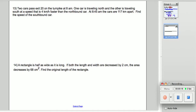Number 13, two cars pass exit 20 on the turnpike at 8 a.m. One is going north, the other one is going south at a speed that's 4 kilometers per hour faster than the northbound one. At 8:45, which is three quarters of an hour past 8 o'clock, the cars are 117 kilometers apart. Find the speed of the southbound car.